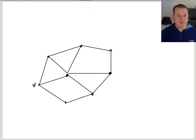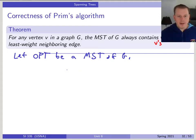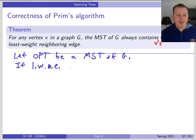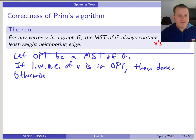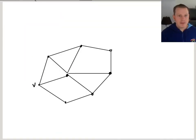Let's look at a picture to help us understand. Here's a graph — I'm not writing any weights — and I have this one vertex V that I care about. If the least weight neighboring edge is already in opt, then we're done. If it is, that's exactly what we wanted to show. Otherwise, we have to transform the optimal solution into one that has the greedy choice, that has this least weight neighboring edge.